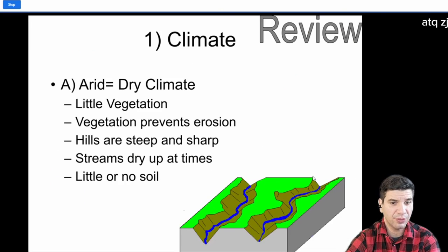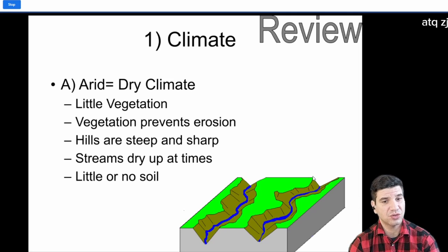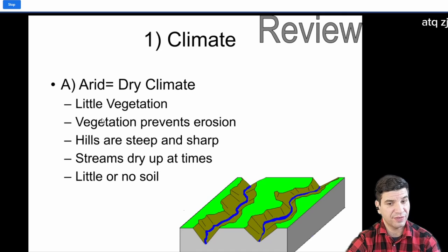So, just some quick review. Remember, arid environments or dry climate, little vegetation. That little vegetation, if it is there, can prevent erosion, but generally speaking, hills are steep and sharp. Streams dry up at times. And that's what it looks like.